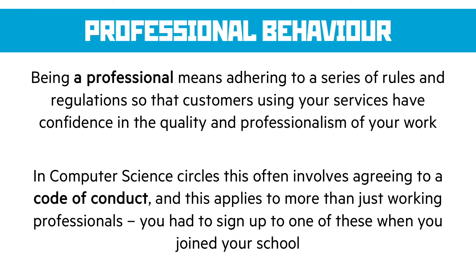Let's start by thinking about professional behaviour. When you're working in a professional industry, we need to adhere to a series of rules and regulations so that the customers using our service have confidence in the quality and professionalism of your work. In the computer science industry, there are many codes of conduct that we can sign up to and some industry bodies that regulate us. But in any computer science or IT field, we often have to agree to a code of conduct just to work in an organisation.